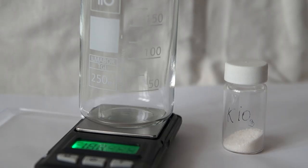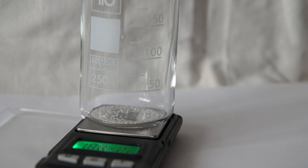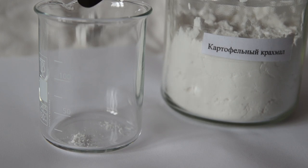Now let's prepare the second solution. Take 0.5 g of potassium iodate and dissolve it in 35 ml of distilled water.